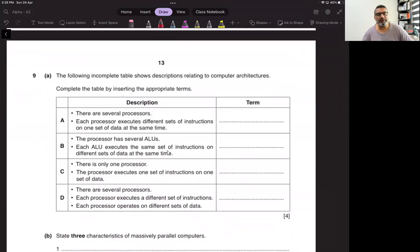The following incomplete table shows descriptions relating to computer architecture. Complete the table by inserting the appropriate term. If you remember, there are different types of architecture like MISD, SISD. There are several processors. Each processor executes different sets of instructions on one set of data at a time. This is multiple instructions, single data. Multiple instructions mean multiple programs and one data at a time means single data.